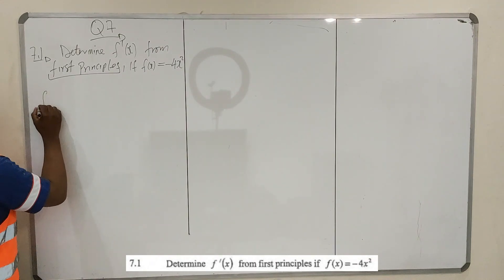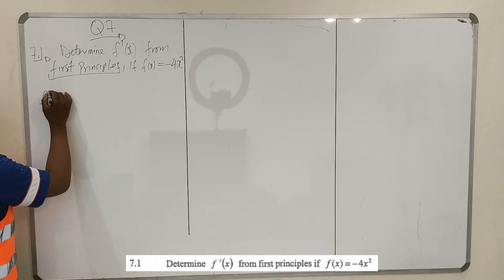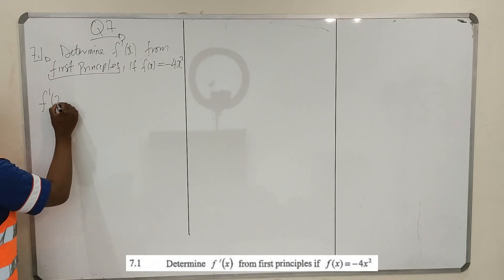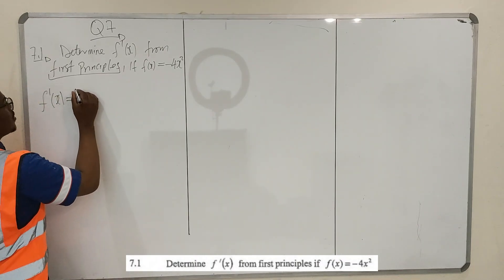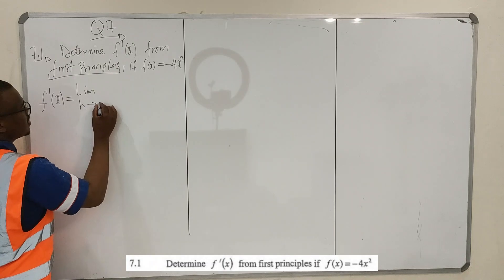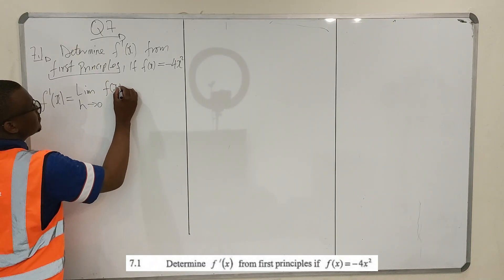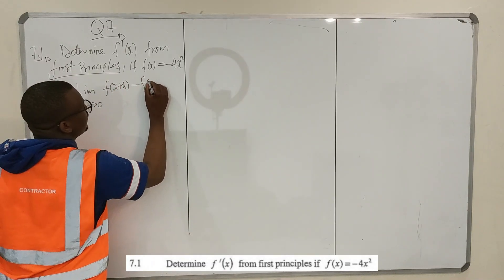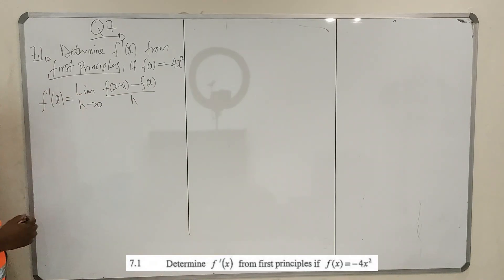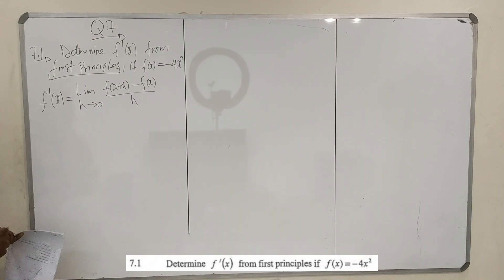What is the derivative definition? The derivative definition says that the derivative of the function f is equal to the limit as h goes to 0 of f of x plus h minus f of x, all over h. This is the definition that they want us to use. So we're going to use this definition.